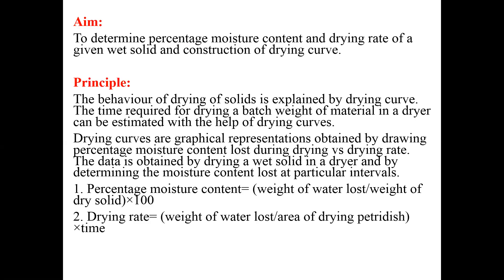Percentage moisture content is calculated by dividing the weight of water lost by the weight of dry solid, multiplied by 100. The data is obtained by drying a wet solid in a dryer machine and, after some interval, determining the moisture content lost by weighing the petri dish or dried solid mass.